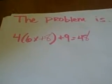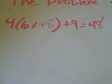The problem is 4 times 6x plus 8 plus 9x, which equals 48.